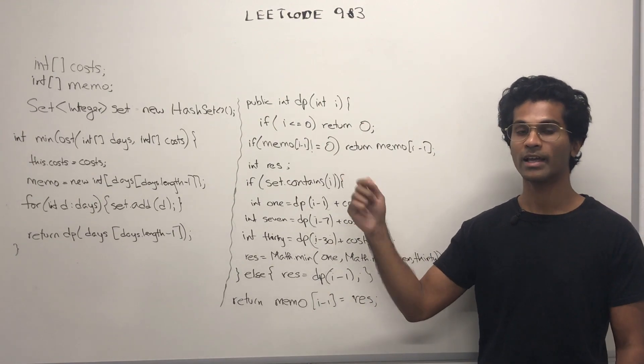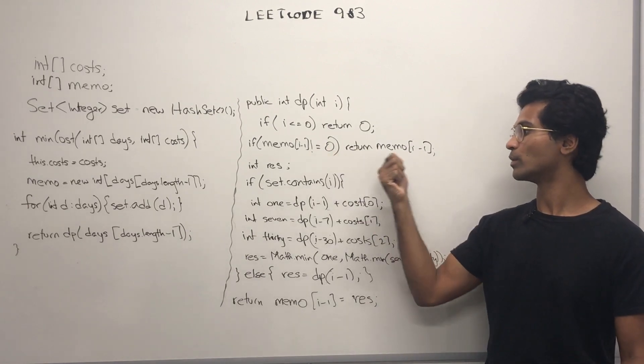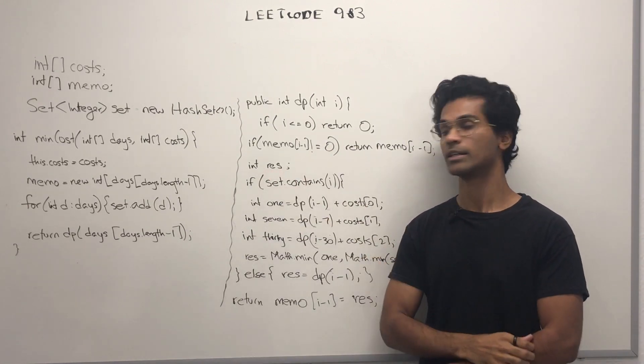Otherwise, we're going to check our cache. If the result of that cache exists, then we return it. Otherwise, we're going to initialize a result integer.